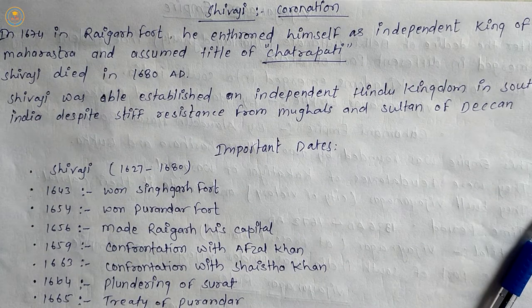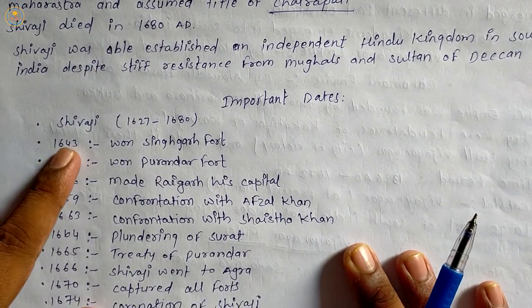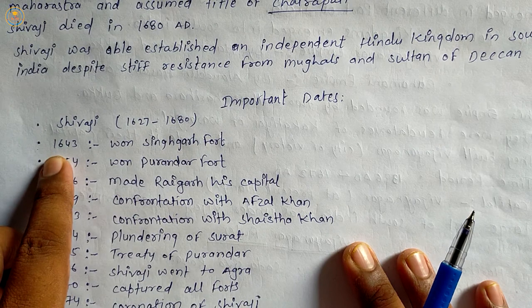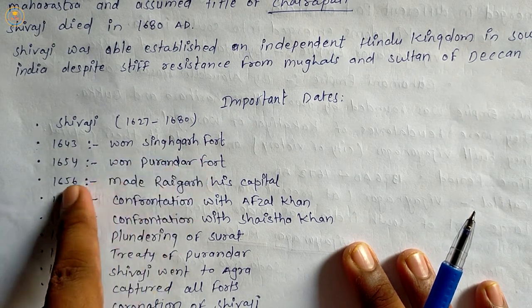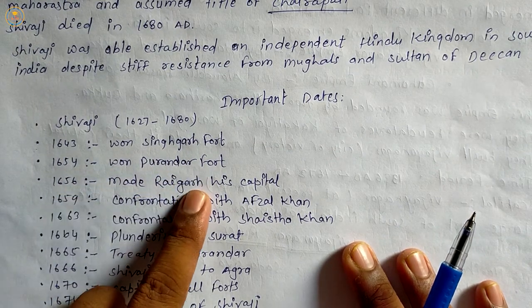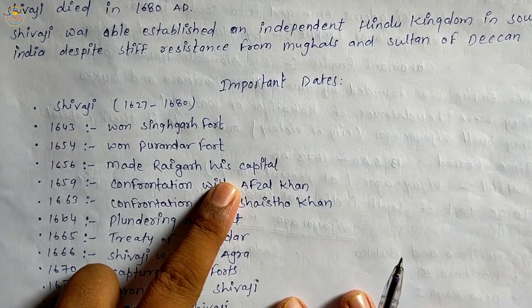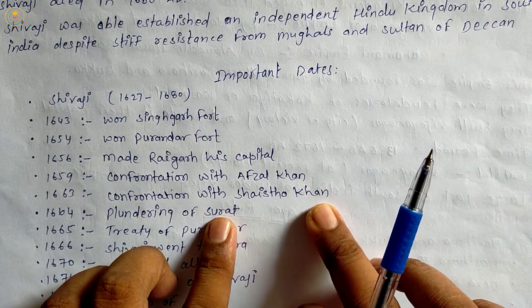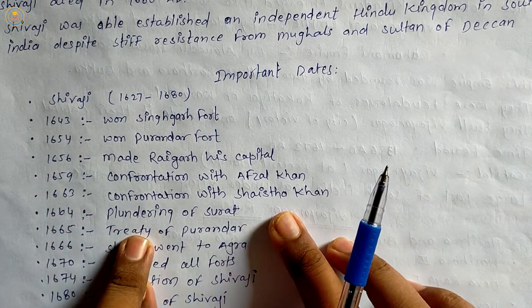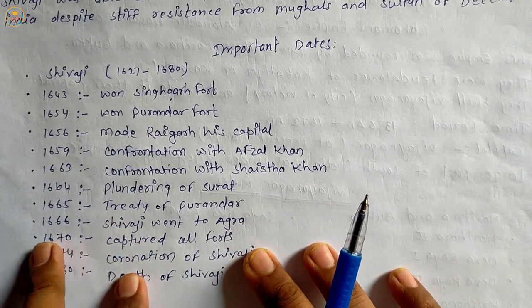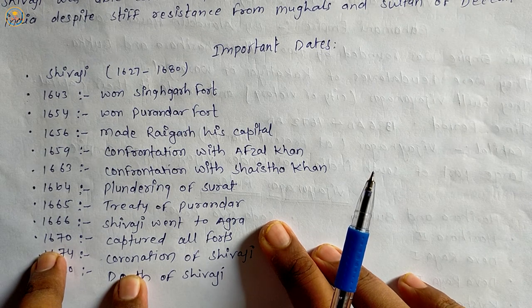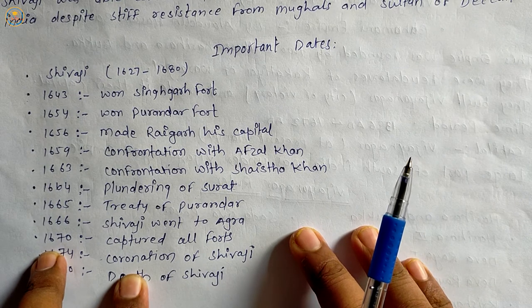Let's see some important dates. Shivaji was born in 1627 and died in 1680. In 1643, he won Sinhagad Fort. In 1654, he won Purandar Fort. In 1656, he made Raigad his capital. In 1659, confrontation with Afzal Khan. In 1663, confrontation with Shaista Khan. In 1664, plundering of Surat. In 1665, the Treaty of Purandar. In 1666, Shivaji went to Agra where he was insulted as a third-class Mansabdar and imprisoned. In 1670, he recaptured all forts from the Mughals. In 1674, coronation of Shivaji. And in 1680, death of Shivaji.